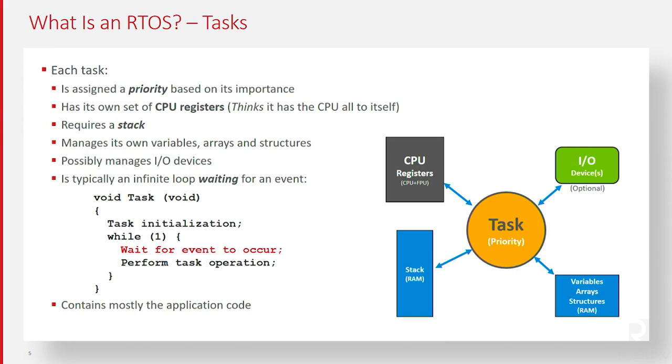As a general rule, a task is always implemented as an infinite loop. The task initializes — just like standard C code — then waits for an event to occur. The event could be an ISR, another task signaling that task, or a message being sent from another task. Whenever the event occurs, the task gets scheduled by the RTOS and then executes to perform the operation for that event.